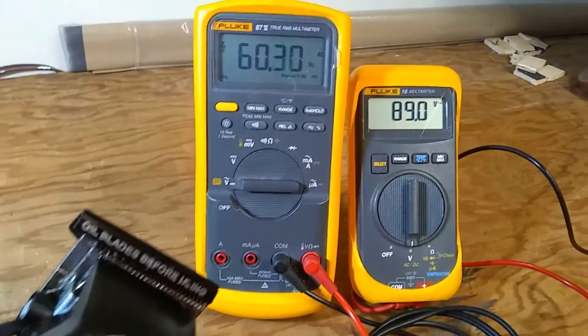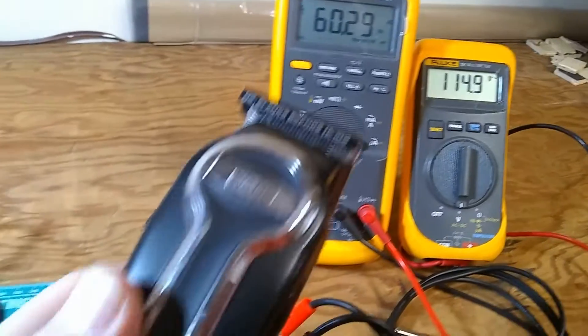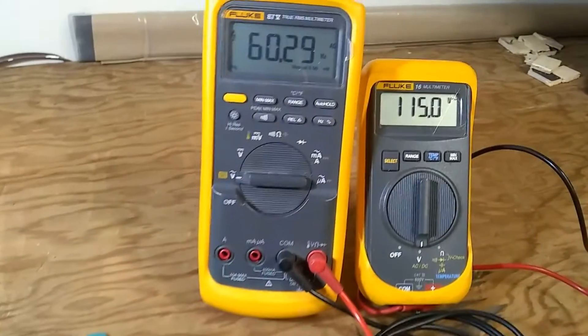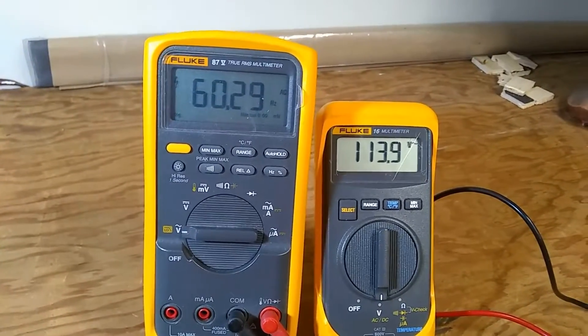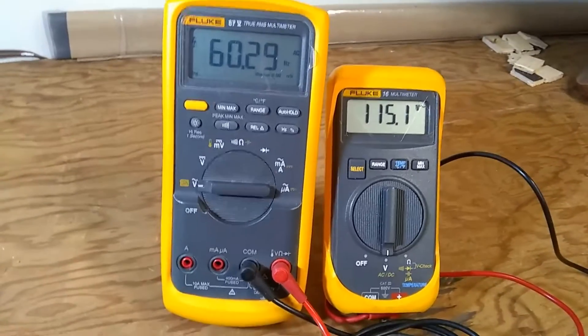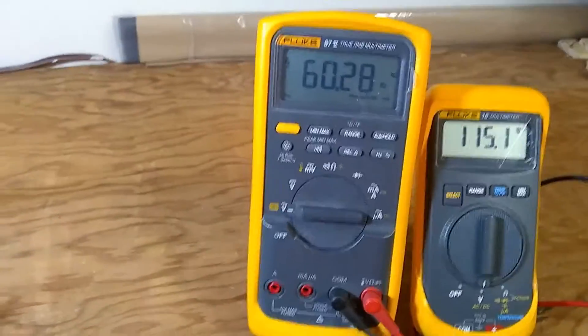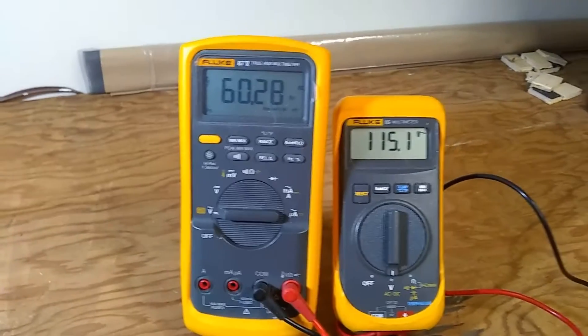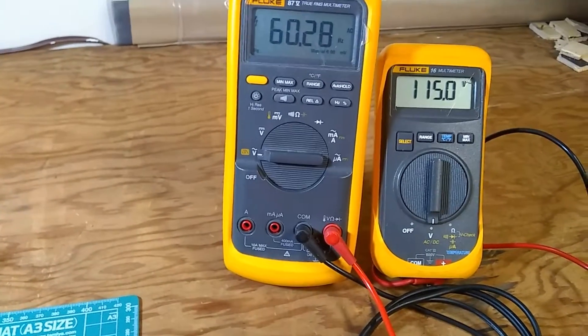Now this is running and the voltage jumped to 114-115V, so it's perfect voltage. The frequency hasn't moved; it hasn't changed. The frequency is actually perfect for the purpose of these clippers.